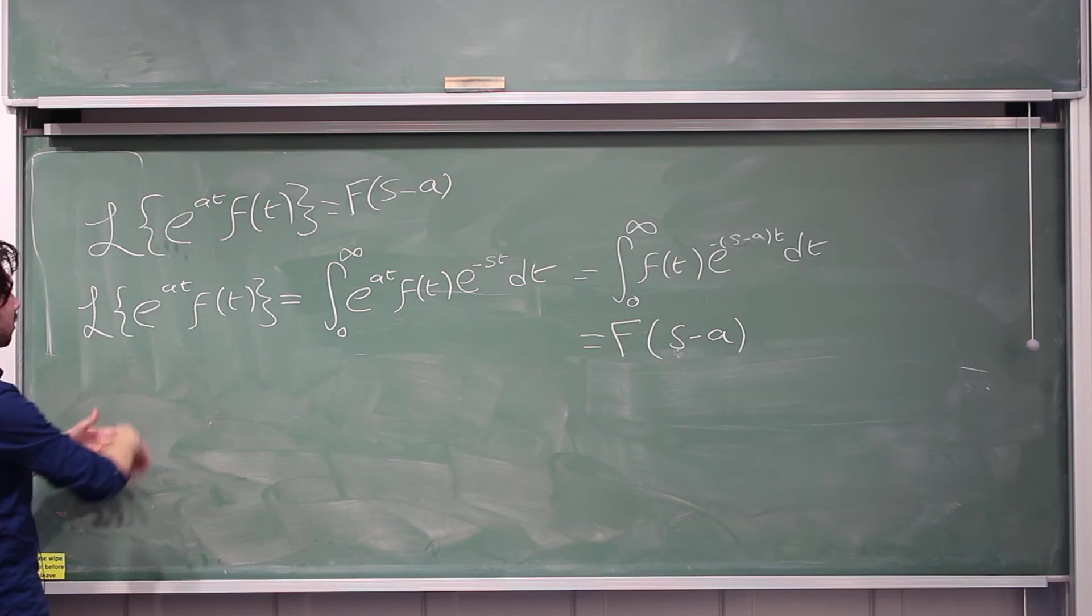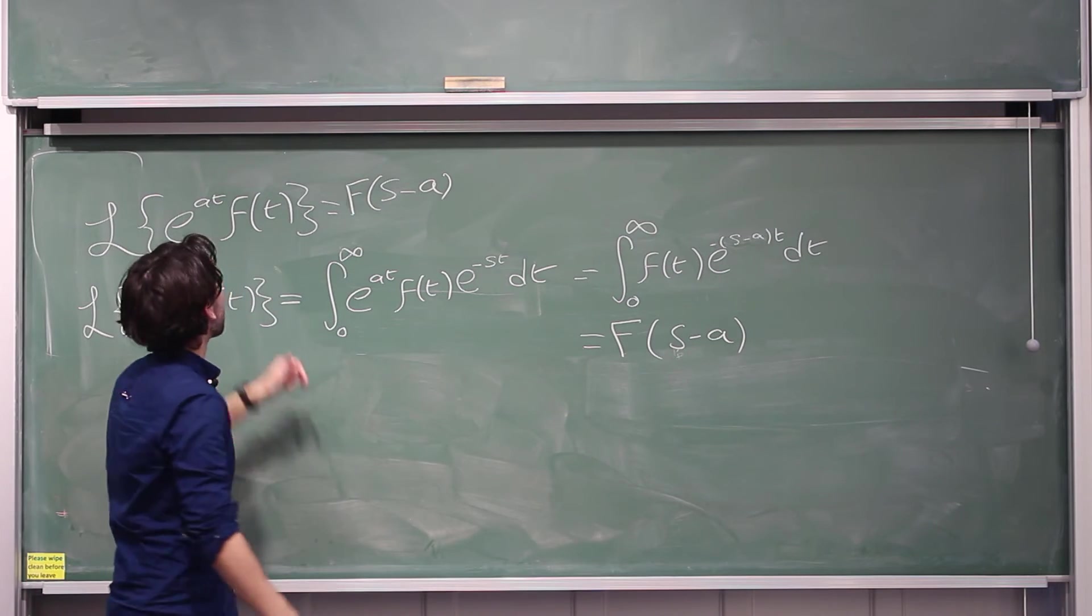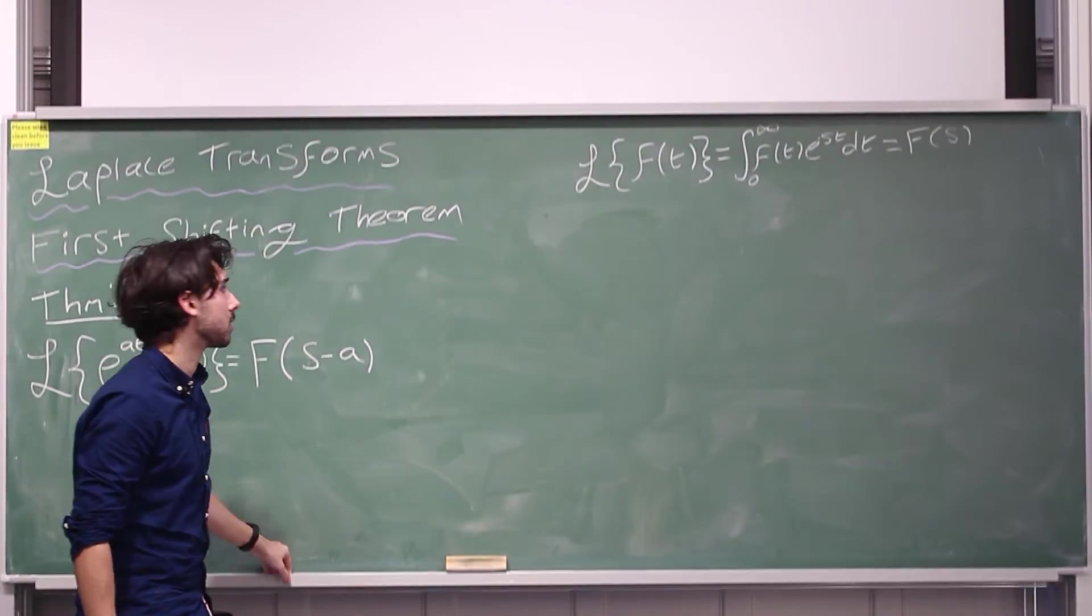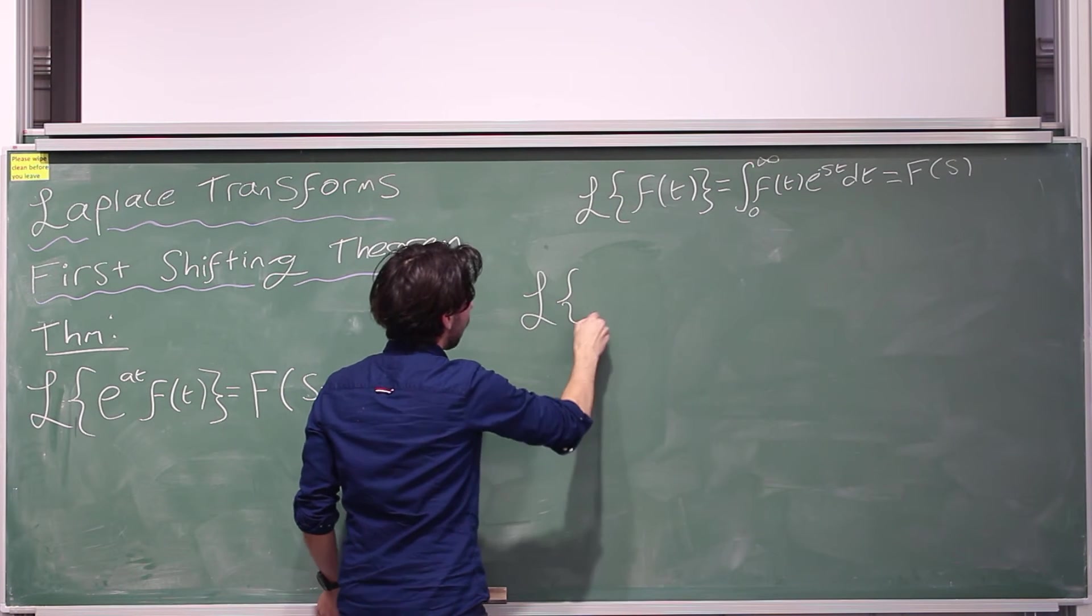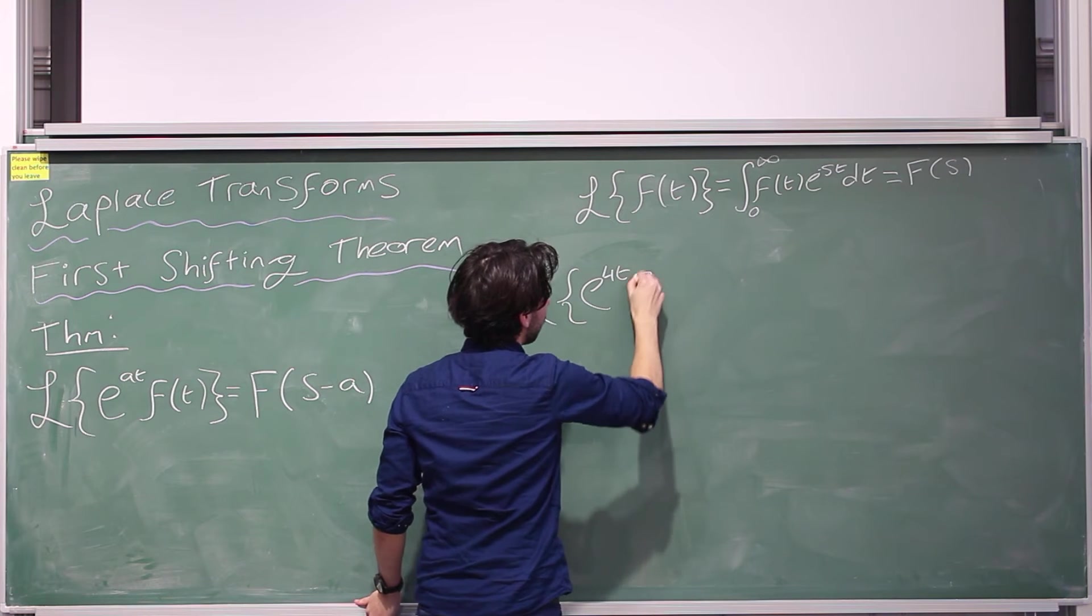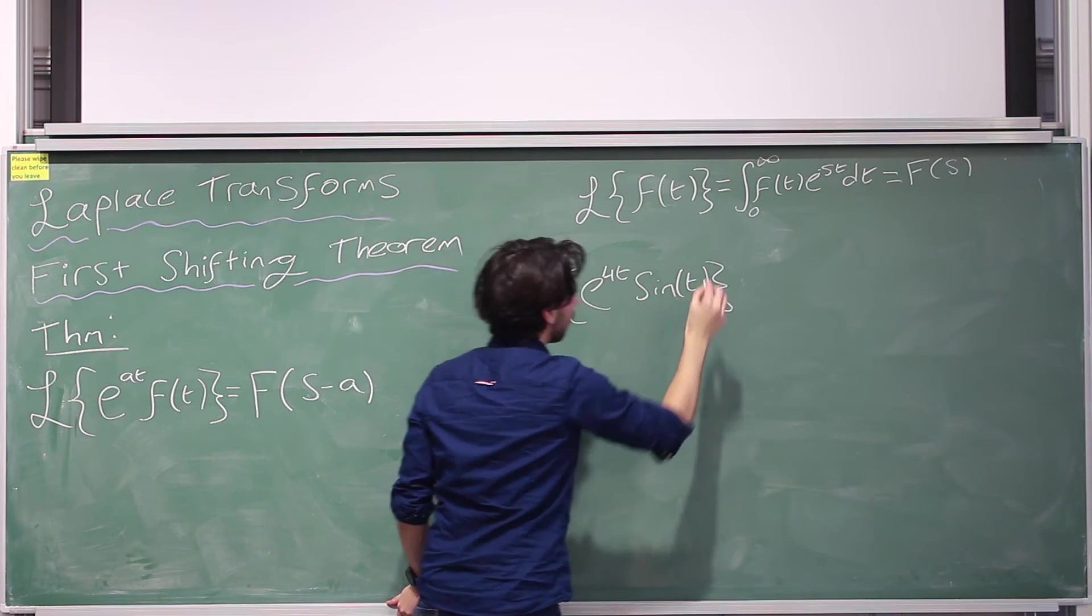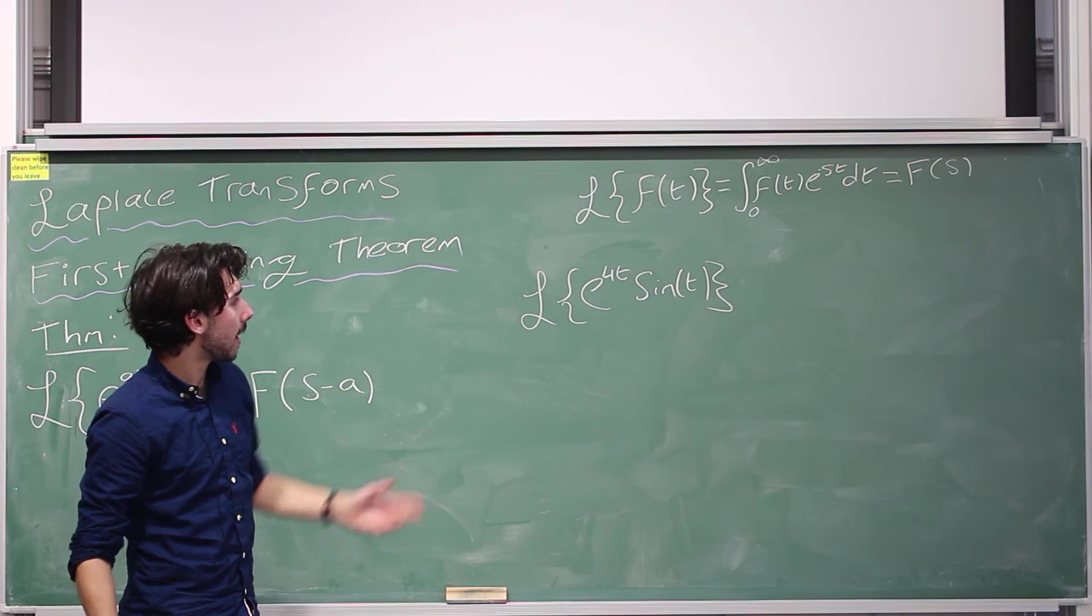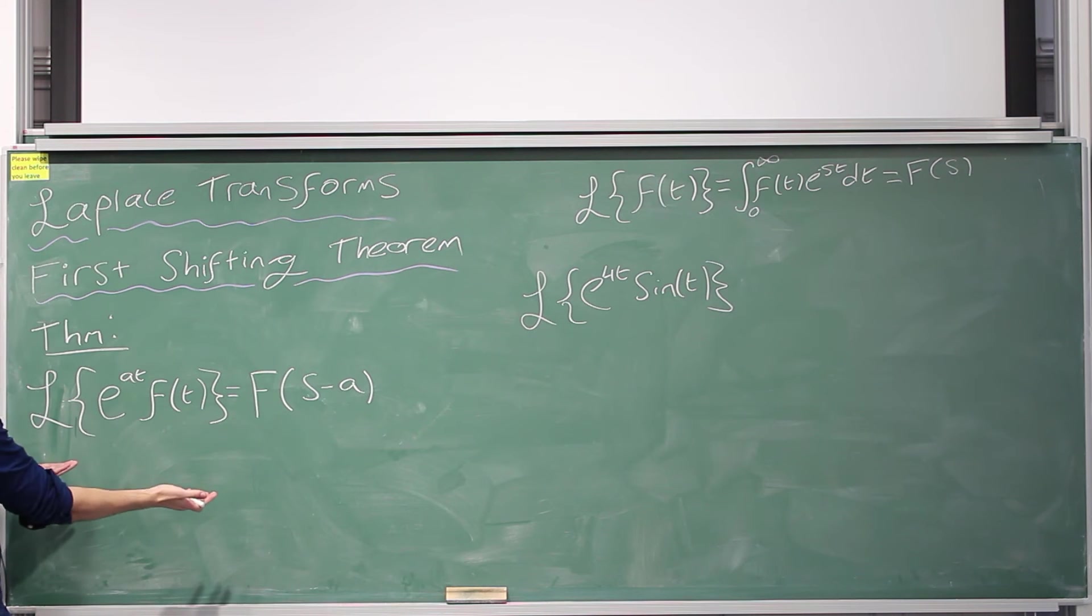So we've just shown the Laplace transform of e to the at, f of t becomes capital F of s minus a. Okay, now let's go back to this board and do an example, as promised. Let's work out the Laplace transform of e to the 4t sine t. Okay, so clearly a is the number 4, and f of t is sine t. So again, by the first shifting theorem, this is what we've got right now.